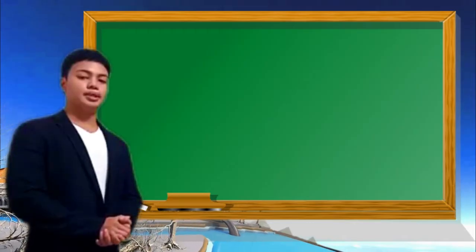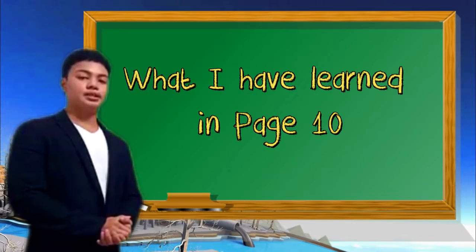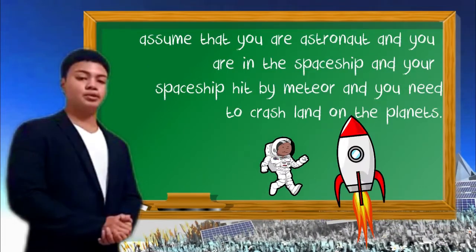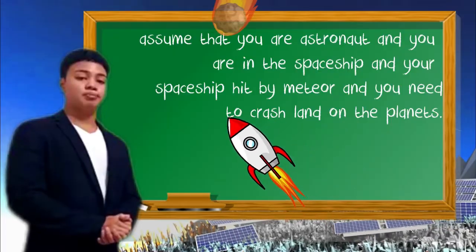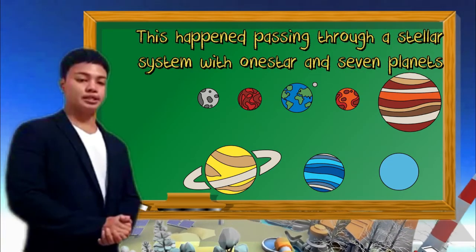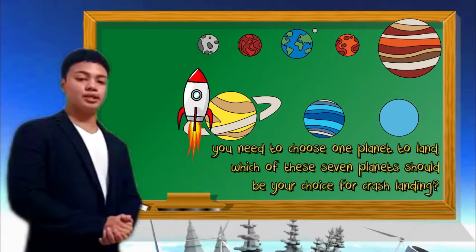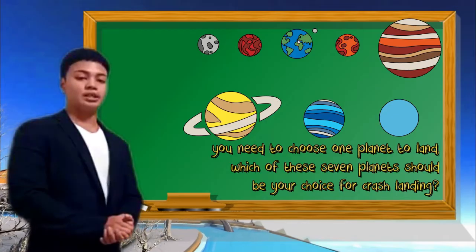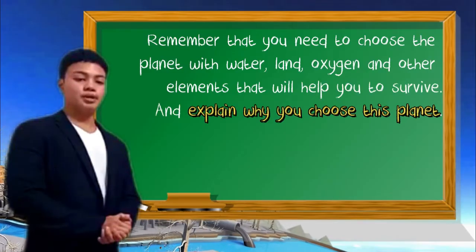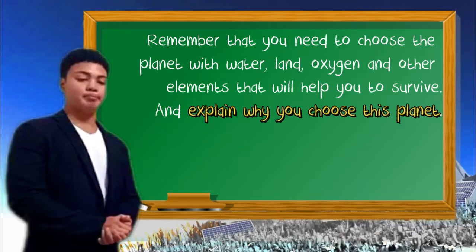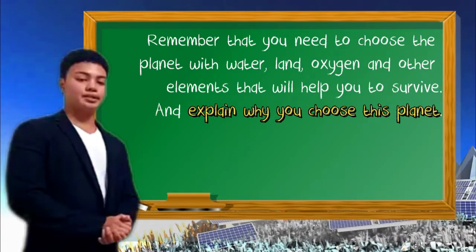Great! Shall we continue to the next activity? Yes, it's what I have learned on page 10. Now, in this activity, assume that you are an astronaut and your spaceship was hit by a meteor and you need to crash land on a planet. This happened in a stellar system with one star and seven planets. You need to choose one planet to land. Which of these planets should be your choice for crash landing? Remember that you need to choose the planet with water, land, oxygen, and other elements that will help you survive. Explain why you chose this planet. Good luck, learners!